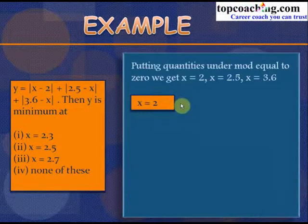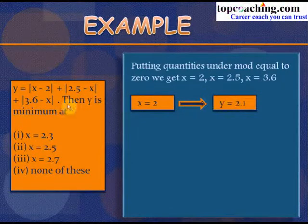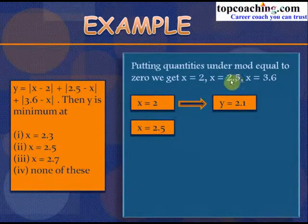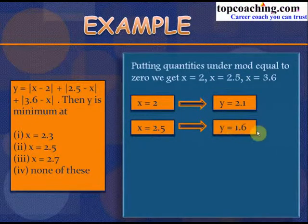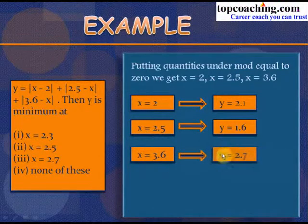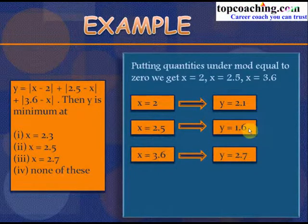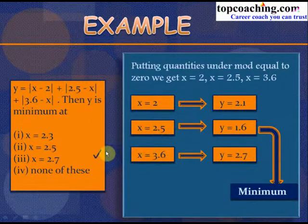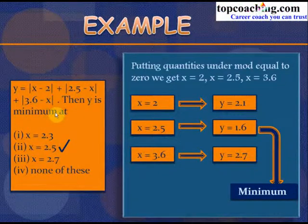Substituting: at x = 2, y = 2.5; at x = 2.5, y = 1.6; at x = 3.6, y = 2.7. The minimum value of y is 1.6, occurring at x = 2.5. So the answer is x = 2.5. This is how we solve such problems using the coaching funda.